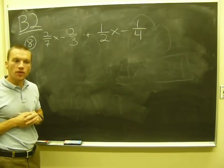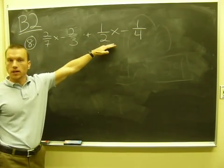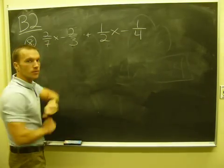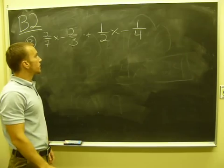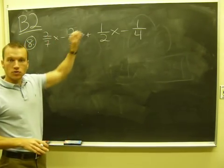So in order to simplify this like the previous problems from this homework assignment, we have to combine our x terms. I see two x terms here. Combine our number terms. I see two number terms here. In this case we're dealing with fractions, so we're going to have to figure out how to add, subtract fractions.